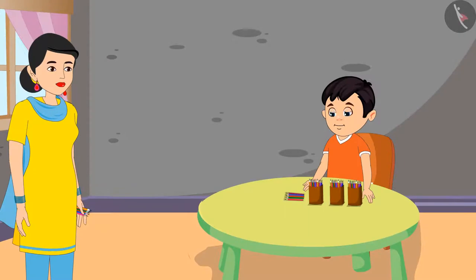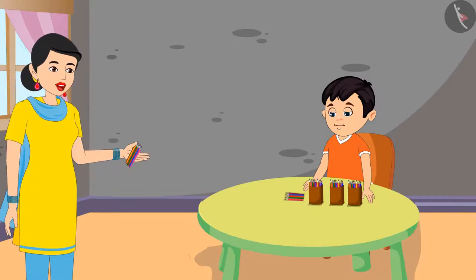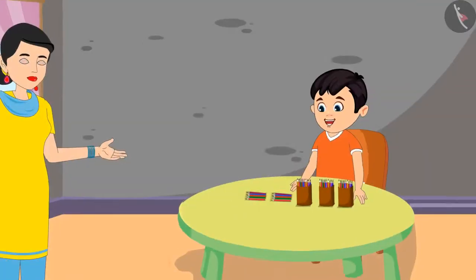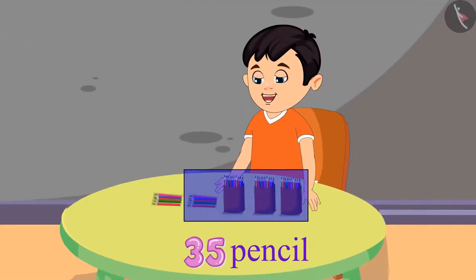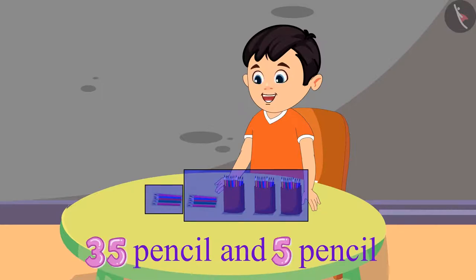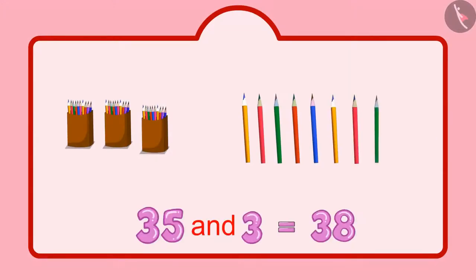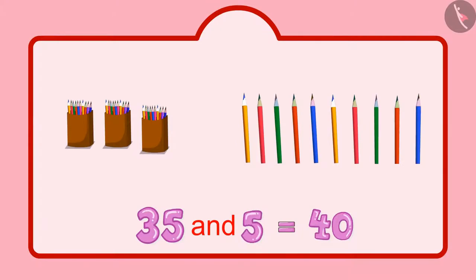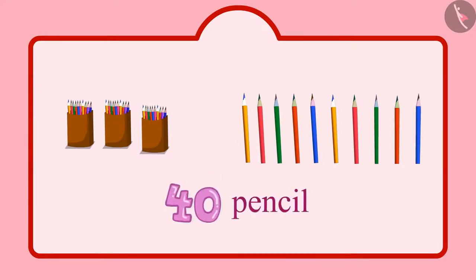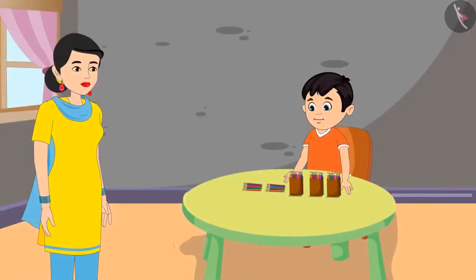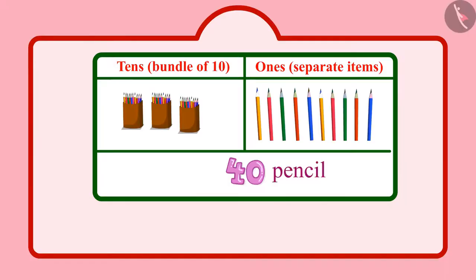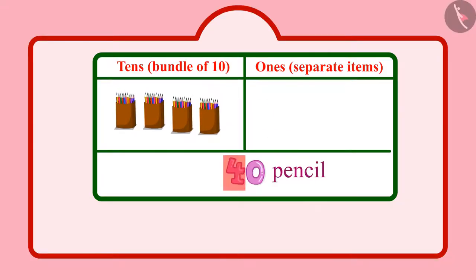After some time, Chotu's mother found some more of his pencils. She said: 'Chotu, I have got 5 more of your pencils. Keep these together as well.' Chotu said: 'I had 35 pencils and now 5 pencils more, that means 5 units more. After 35: 36, 37, 38, 39, 40. Now I have 40 pencils.' His mother confirmed: 'Yes, Chotu, you are right. How many tens do you have now?' Chotu replied: '40 pencils means I have 4 tens.'